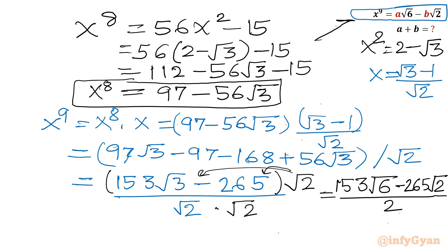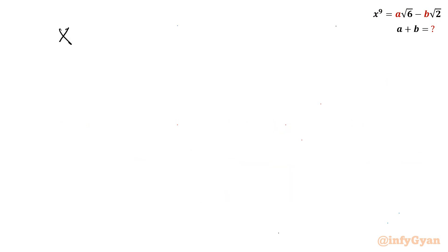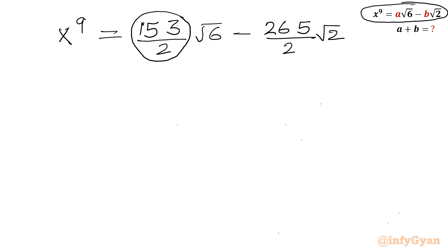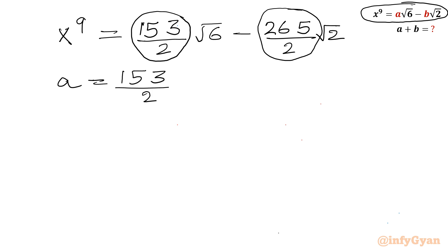Now I will compare the a and b values from this x to the power 9 equation. It is framing the a root 6 minus b root 2 format. So let me compare both and write a and b values. So a is 153 over 2, and b is 265 over 2. So x to the power 9 equals (153/2) root 6 minus (265/2) root 2. Comparing the right side: this is our a, and this is our b. So a is equal to 153 over 2, and b is equal to 265 over 2.